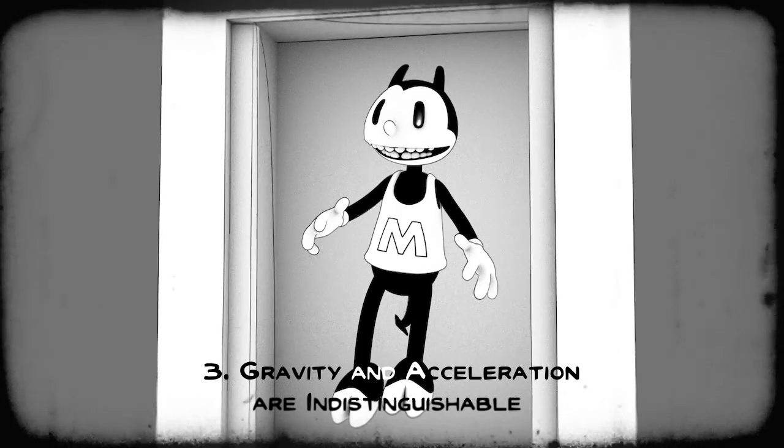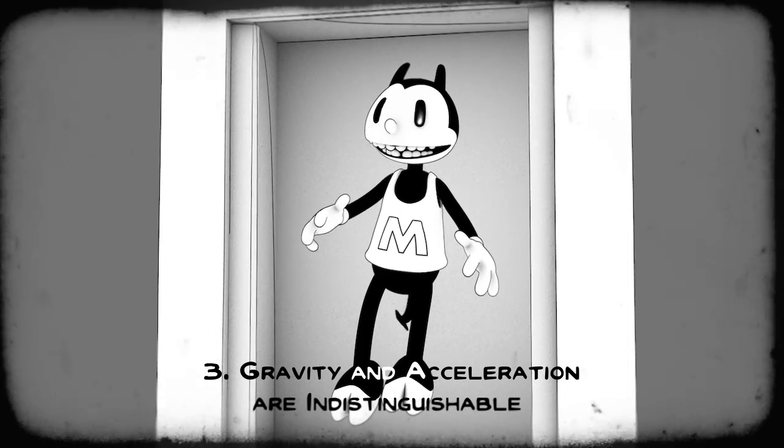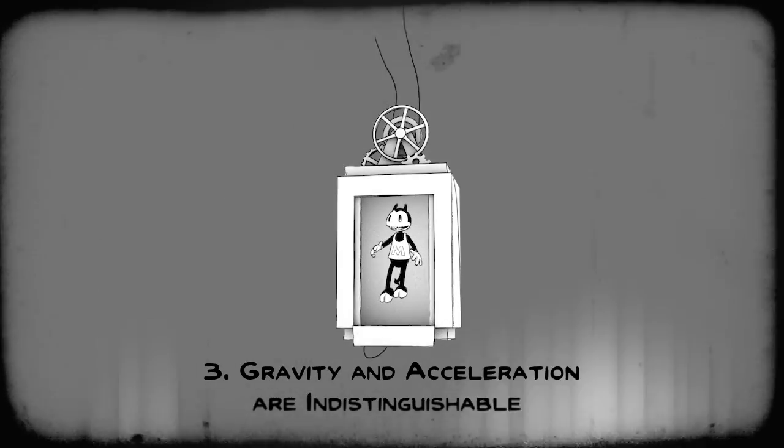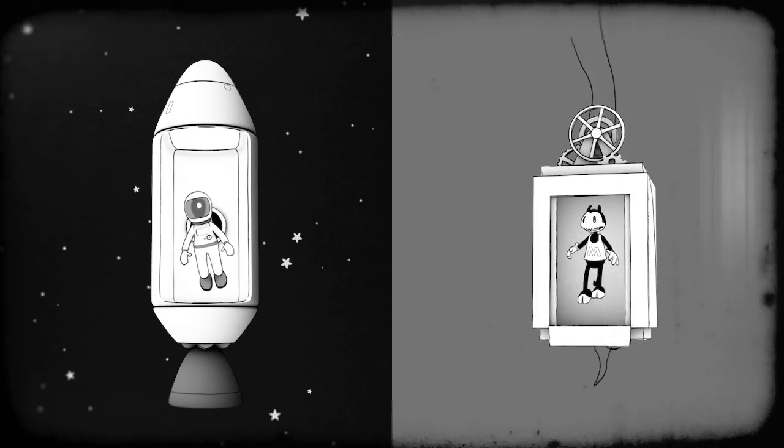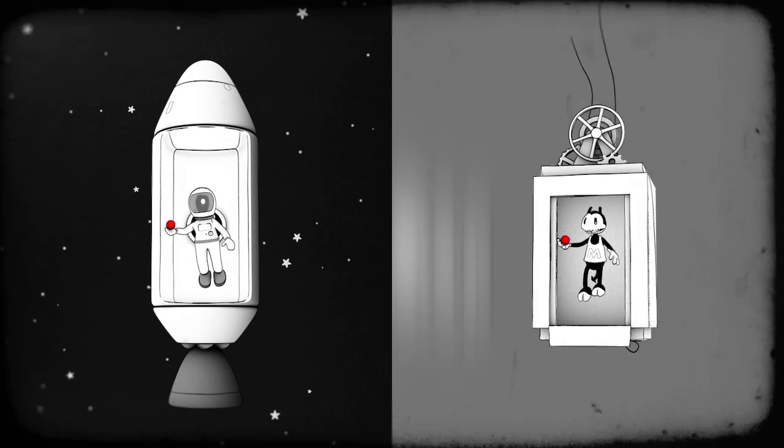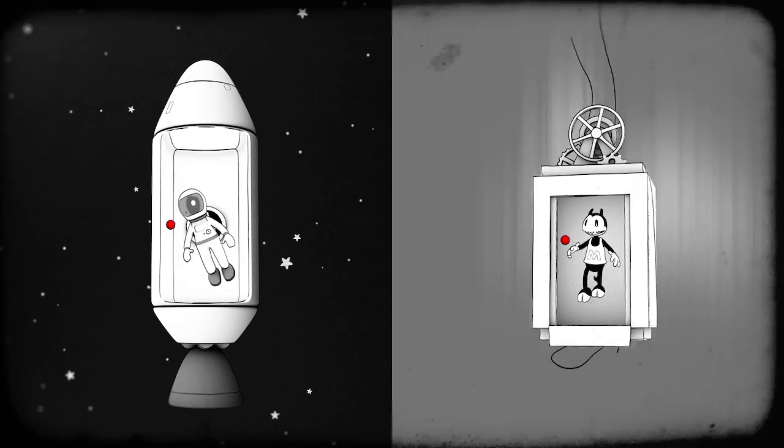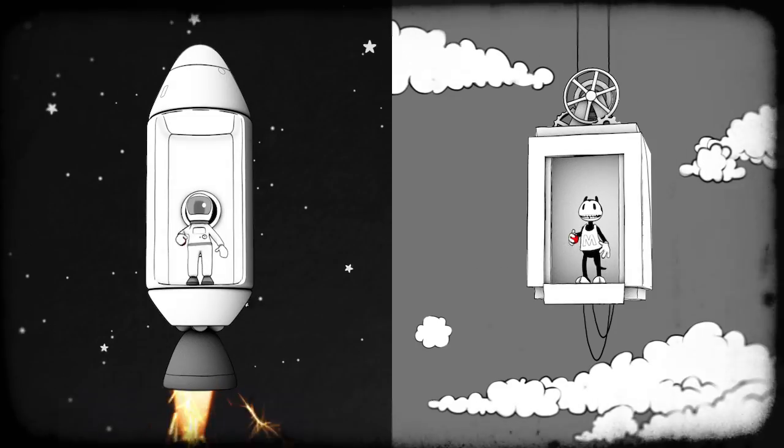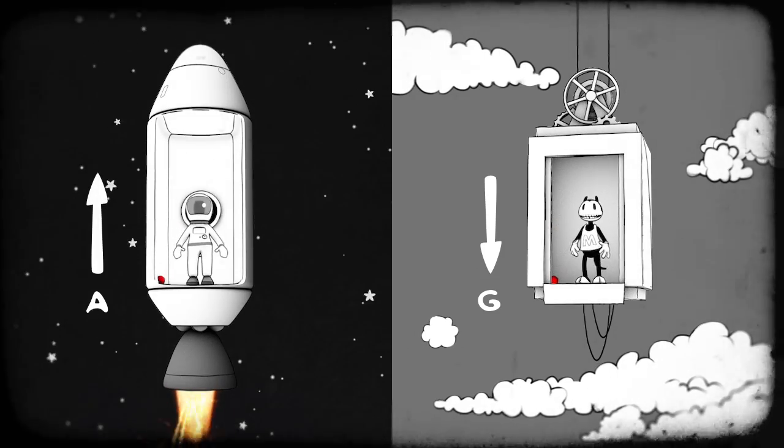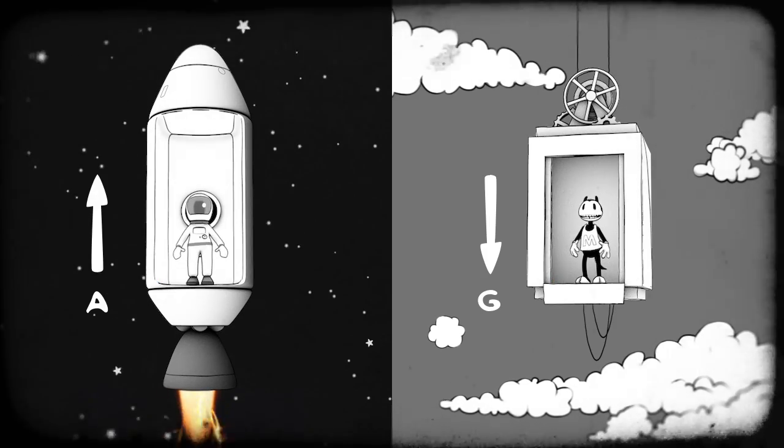General relativity is based on the principle of equivalence between gravity and acceleration. Therefore, there is no way to know if we are in free space or free-falling in a gravitational field, nor if we are uniformly accelerating or standing still in a gravitational field.